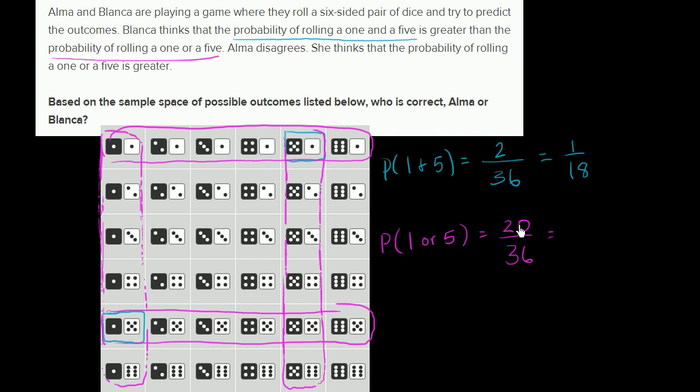So it's twenty out of the thirty-six equally likely outcomes. Or, if we divide both the numerator and the denominator by four, we get five over ninths. Five ninths of the equally likely outcomes involve a one or a five. So clearly five ninths is larger than one eighteenth. Five ninths is the same thing as ten eighteenths. So the probability of a one or a five is greater. So Alma was right. Who is correct? Alma. Alma is correct.